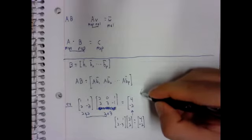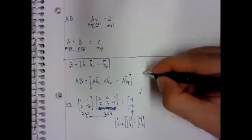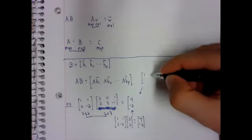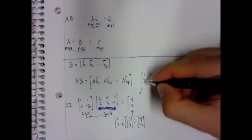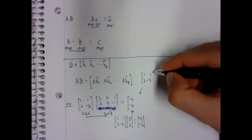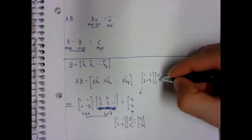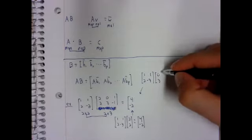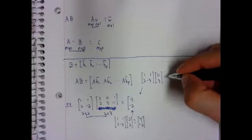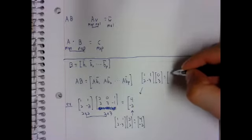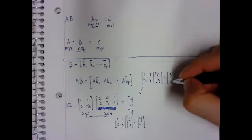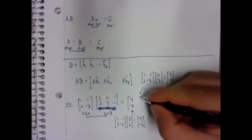The second column: one, one, two, negative three times zero, three is three, negative nine.